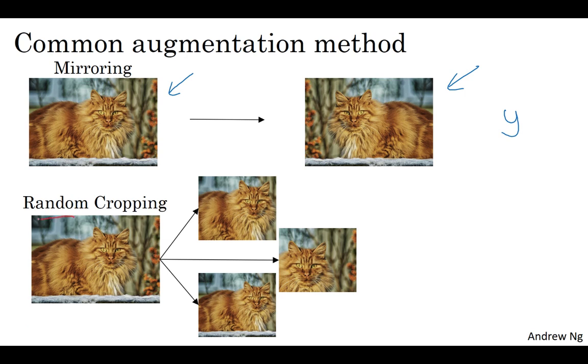Random cropping isn't a perfect data augmentation method. You could randomly end up taking that crop, which won't look much like a cat. But in practice, it works well, so long as your random crops are reasonably large subsets of the original image. So mirroring and random cropping are frequently used.